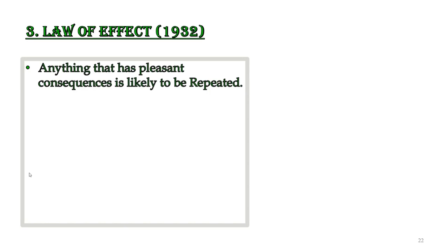We now move towards the last law of our syllabus, which is the Law of Effect. It was given in 1932, two years after the Law of Exercise. It's a remarkable law that we come across in our everyday life. The Law of Effect states that anything that has pleasant consequences is likely to be repeated — we are more likely to repeat something if it gives us pleasure and if we like the result.